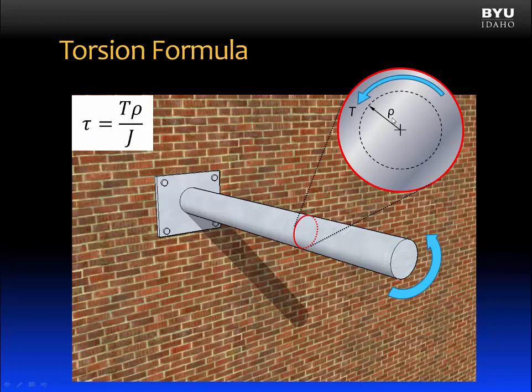We can also see that when rho goes to zero, when it gets smaller, tau also goes to zero. When rho gets bigger, tau will also get bigger.